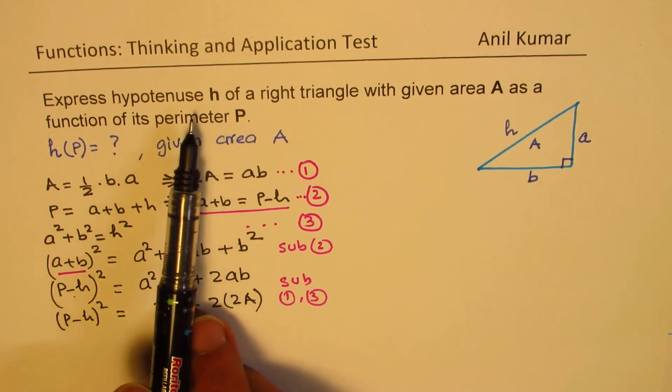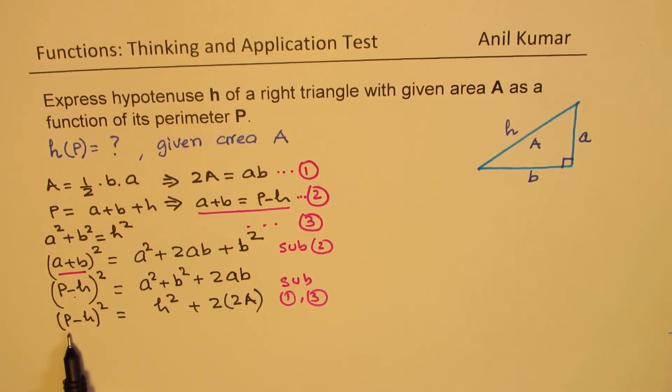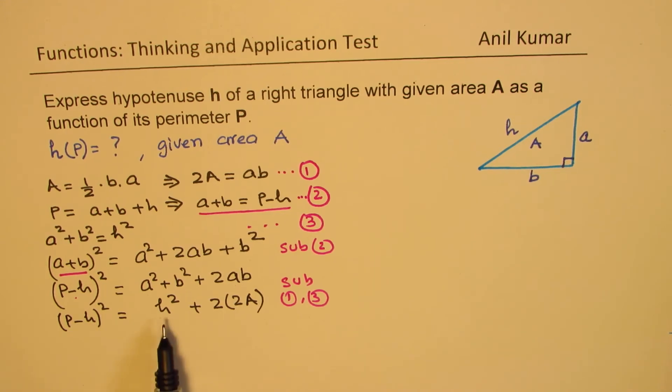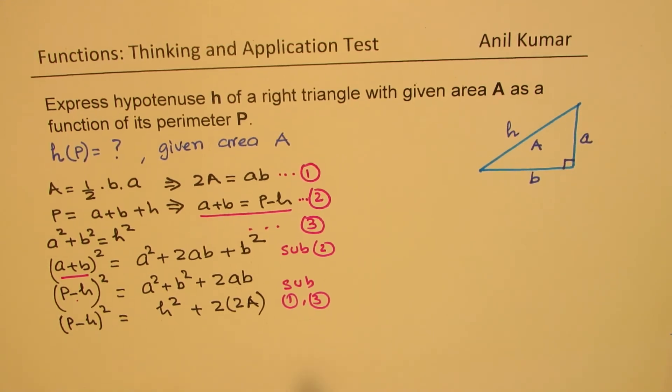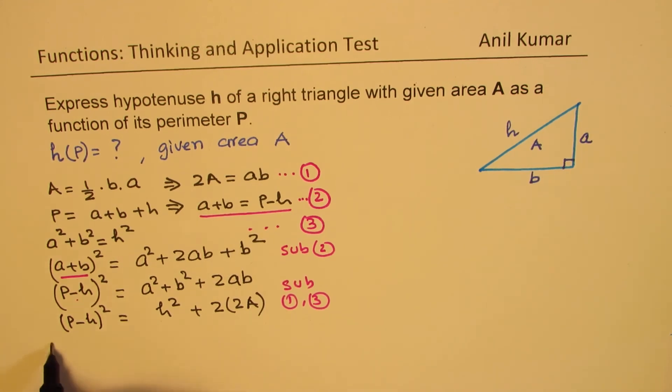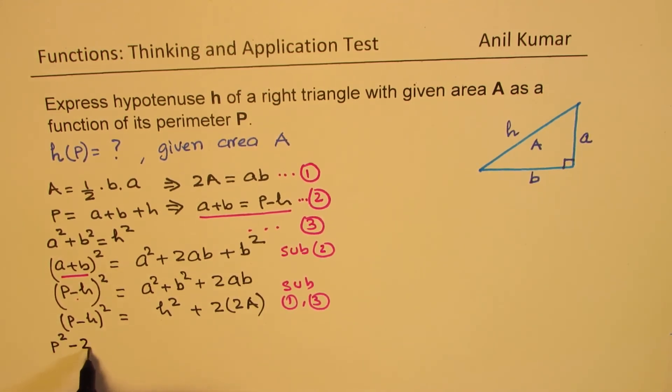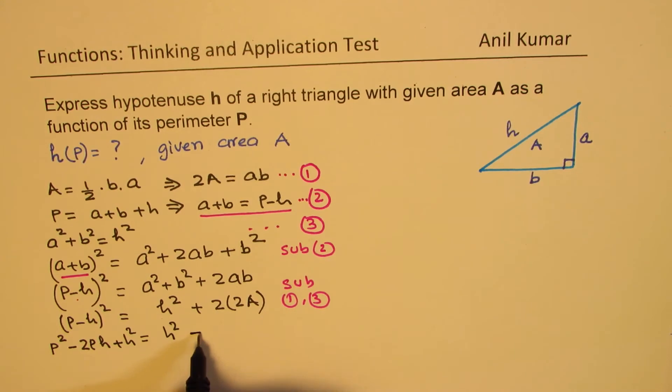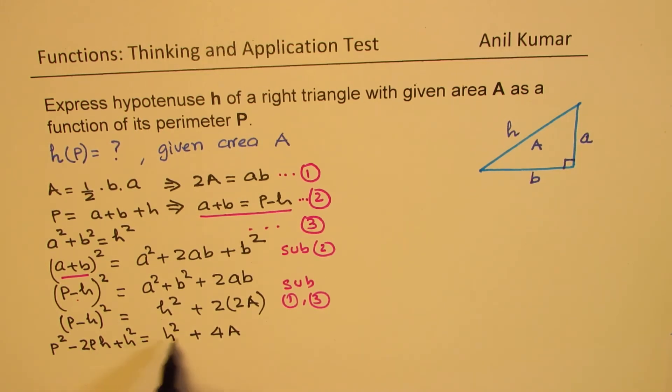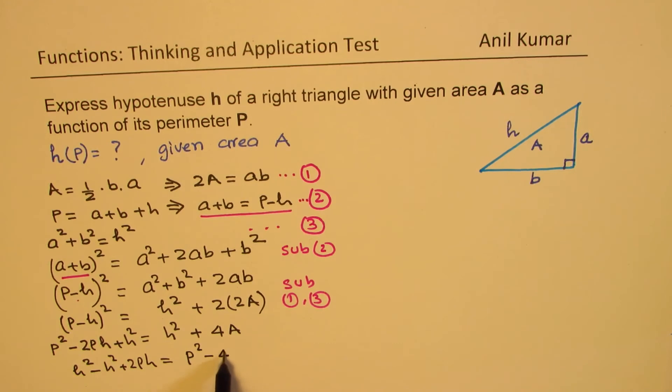Now we need to express hypotenuse as a function of perimeter. So basically, we need to isolate h. So let us expand the left side. We get perimeter squared minus 2 times perimeter times height plus height squared equals height squared plus 4A. Now, bringing h terms together and the other terms, we get h squared minus h squared plus 2Ph equals P squared minus 4A.